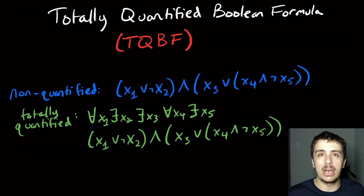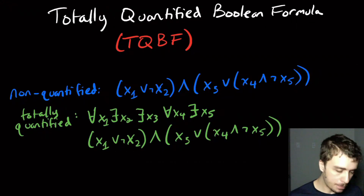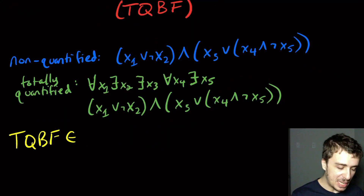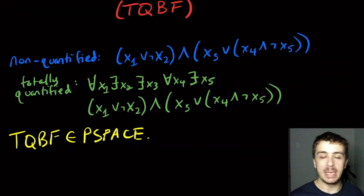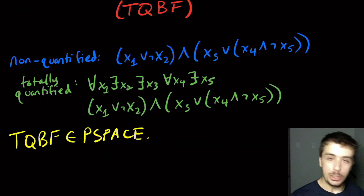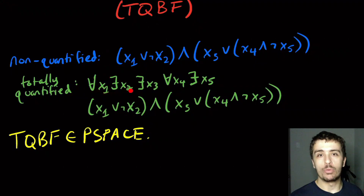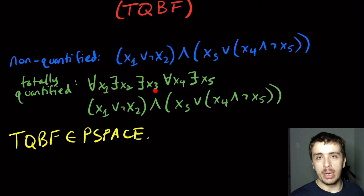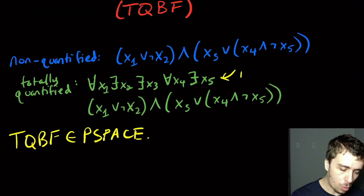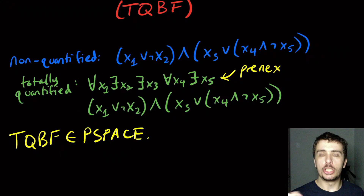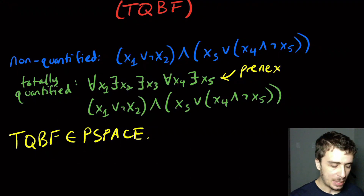For the 'for all' quantifier, the formula could be totally different depending on whether you set a variable to true or false, so we haven't found an NP algorithm yet. We can easily show that TQBF is in PSPACE — polynomial space. The algorithm tries every possible variable assignment. Without loss of generality, we can put quantifiers out front — this is called prenex normal form — and proceed recursively.